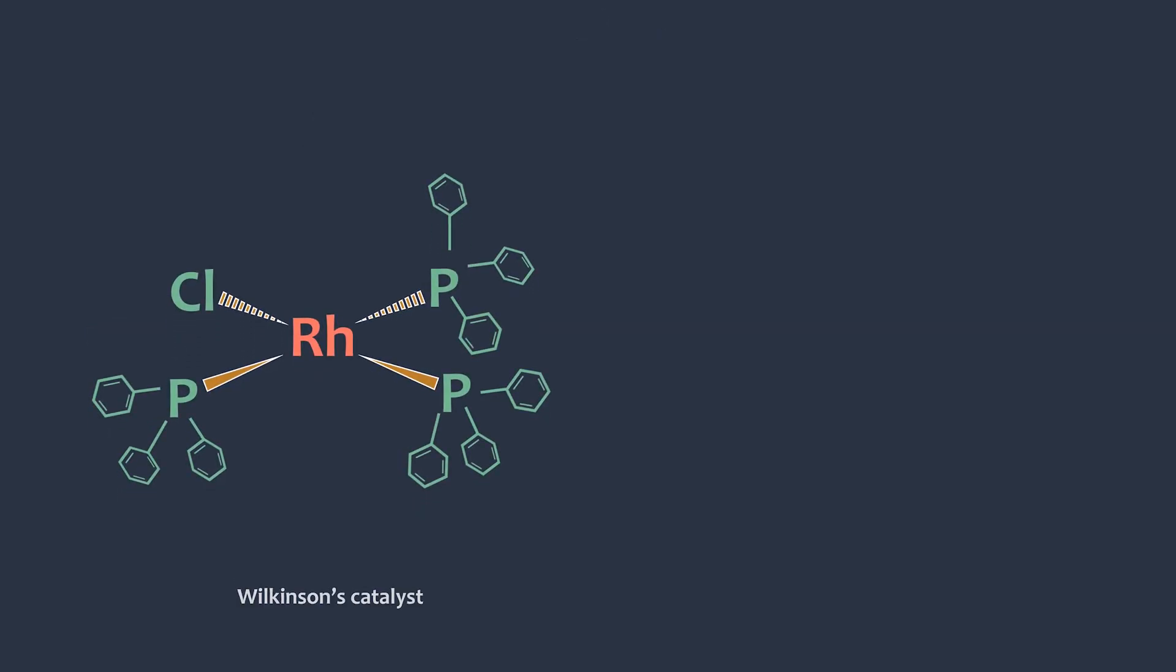The next complex we have is the Wilkinson catalyst which is used in hydrogenation of alkenes. This complex has a rhodium metal center surrounded by one chloride ligand and three phosphine ligands. First, we need to add some lone pairs to the chlorine ligand. Then, we hydrolytically cleave the metal ligand bonds.